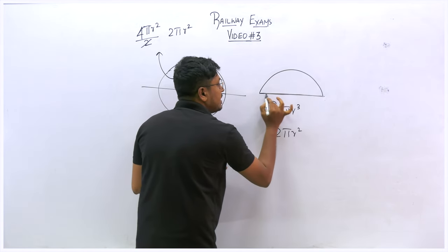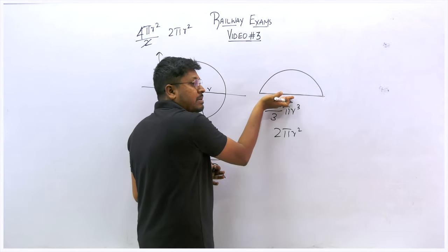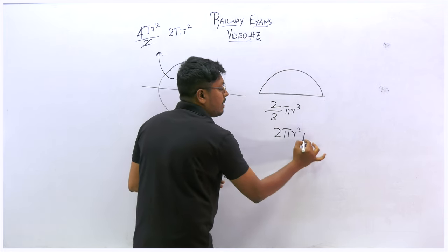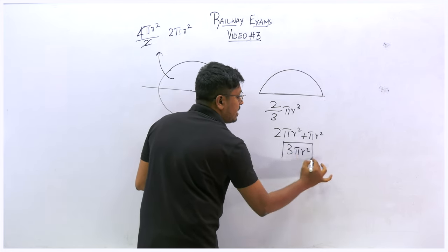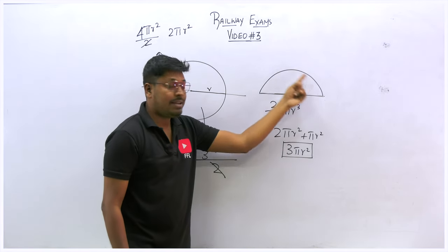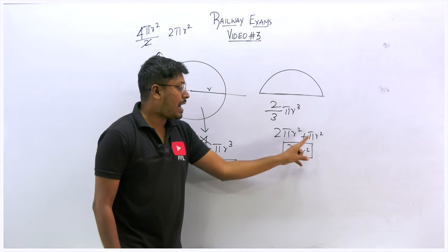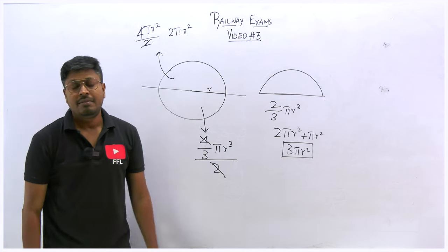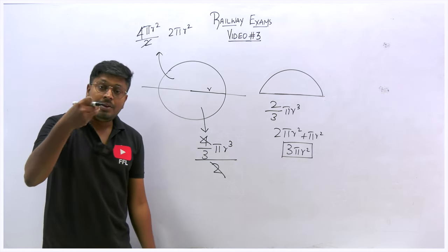When you see the bottom of the hemisphere, you have a circle whose area is πr². Adding that to 2πr² gives 3πr² as the total surface area of a hemisphere. So we have only two formulas: volume = 2/3 πr³ and total surface area = 3πr².